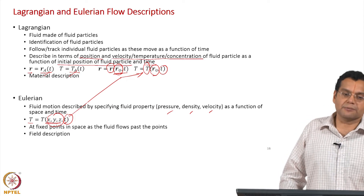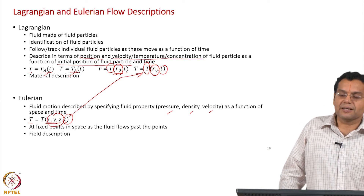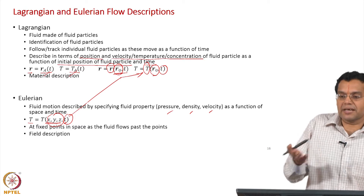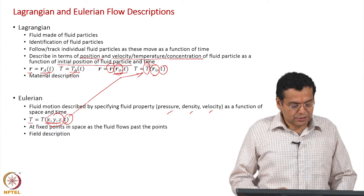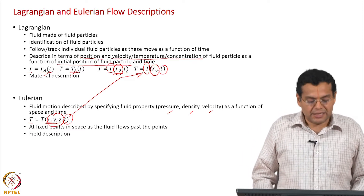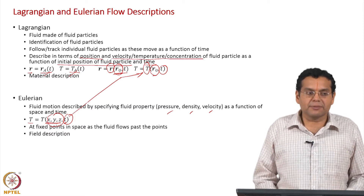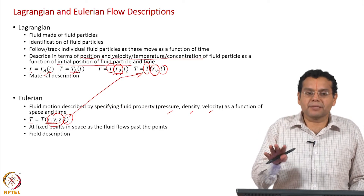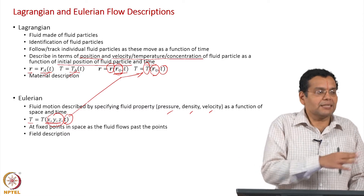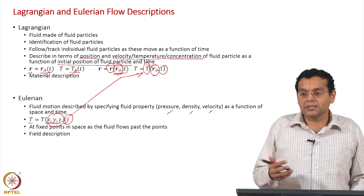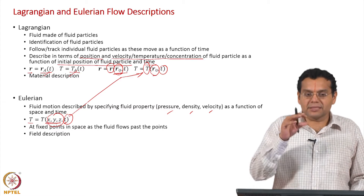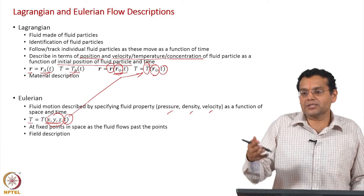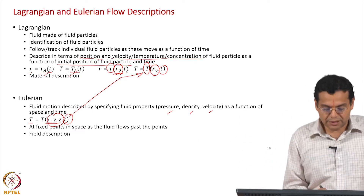Another name for Eulerian description is field description. Whenever we say 'velocity field' or 'temperature field,' it means we are describing the variation of temperature or velocity across space. That is why it is called field description. We will frequently encounter expressions like 'the velocity field is given by this expression' or 'the temperature field is given by this expression.' The word 'field' refers to spatial variation — for example, describing temperature T as a function of x, y, z is called the temperature field; similarly, velocity as a function of x, y, z and time is a field description.